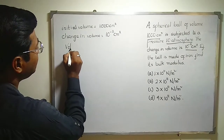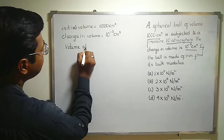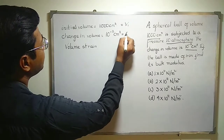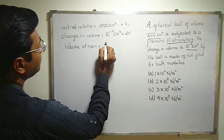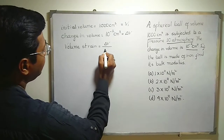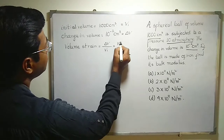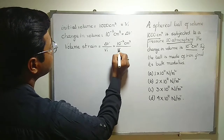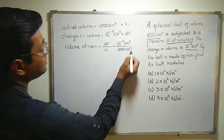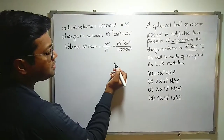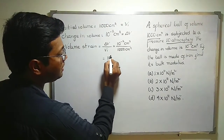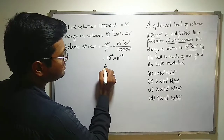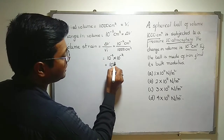Now, if I want to calculate the volume strain: initial volume we write as V_i and the change in volume as ΔV. Volume strain is ΔV divided by V_i. ΔV is 10⁻² cm³ and V_i is 1000 cm³. The cm³ units cancel out, so it becomes 10⁻² divided by 10³, which gives 10 to the power minus 5.